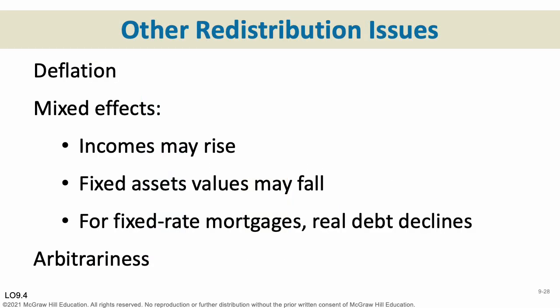Deflation is the opposite of inflation. Generally during recessions we can see it — we saw some deflation in 2008-2009. Deflation is simply negative inflation: prices are going down and your money is becoming worth more. In the past it was more common than the present, but the effects are the reverse of inflation. You can have mixed effects during times of deflation: people's incomes may go up, fixed asset values may fall, and for people with fixed-rate mortgages it helps borrowers since your debt is going down and you're paying back cheaper and cheaper dollars. For the overall economic health, however, high inflation is very harmful.